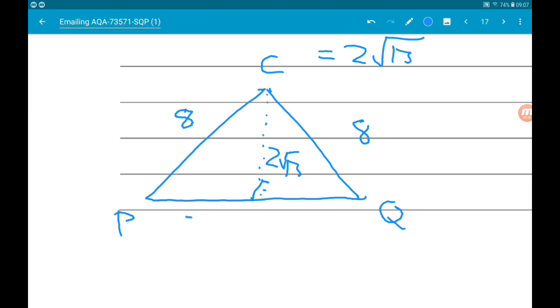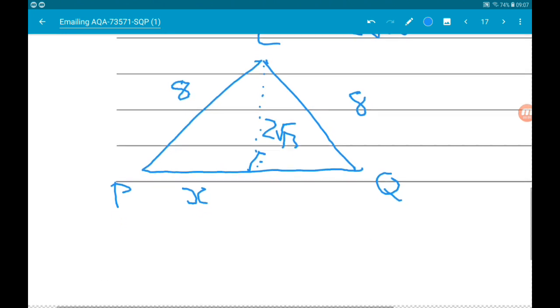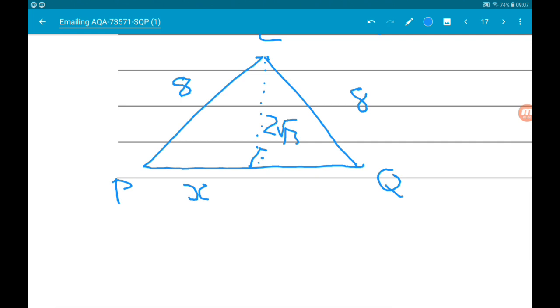So let's just call this bit X. So using Pythagoras we know that X squared is equal to 8 squared minus 2 root 13 squared.